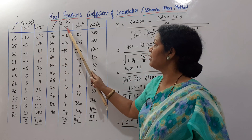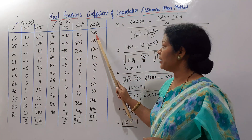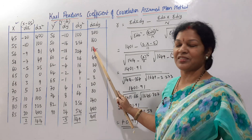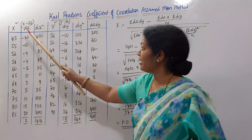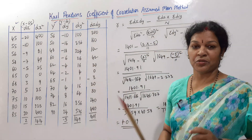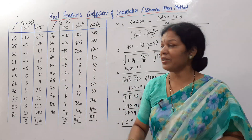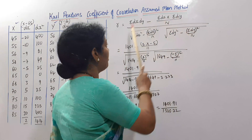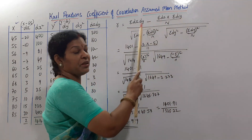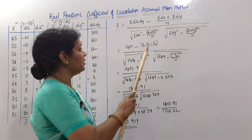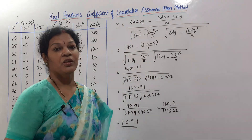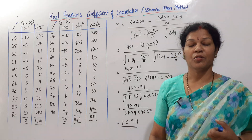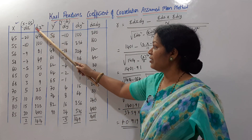Next, dx into dy: minus 20 times minus 10 equals plus 200, minus 10 times minus 16 equals plus 160 — because minus times minus gives plus. We multiply dx and dy and record in the dx·dy column. This gives us all the columns we need: dx·dy, dx, dx-squared, dy, and dy-squared are all present in the formula.